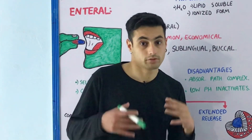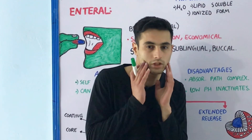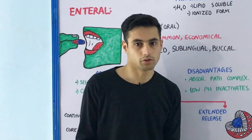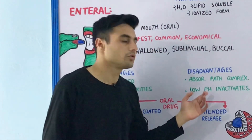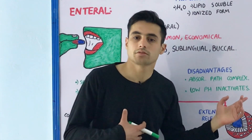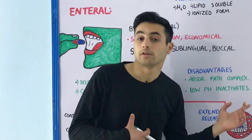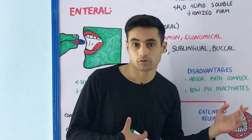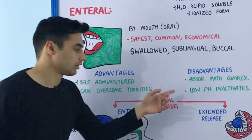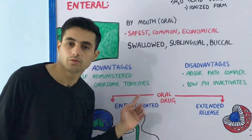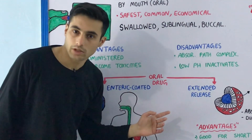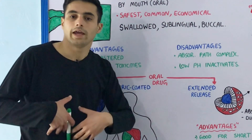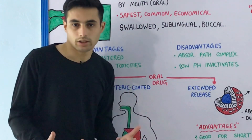There are certain disadvantages of the enteral route because the pathway of absorption is very complex. The drug can be absorbed in your oral cavity, your stomach, or your intestines. Also, the low pH of the gastrointestinal tract deactivates or destroys certain enteral medications. Medications taken through the oral route can be protected from degradation by the acidity of the stomach and intestine.